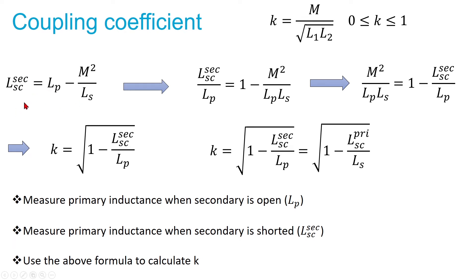Dividing both sides by LP, rearranging terms, we find that M²/(LP·LS) equals 1 minus the shorted inductance divided by LP. This quantity is the coupling coefficient squared. Taking the square root of both sides: k = √(1 − L_short-circuit-secondary / LP). Equivalently, k = √(1 − L_short-circuit-primary / LS). The measurement procedure is: measure the primary inductance with the secondary open to get LP; measure the primary inductance with the secondary shorted to get L_sc; then use this equation to calculate the coupling coefficient.